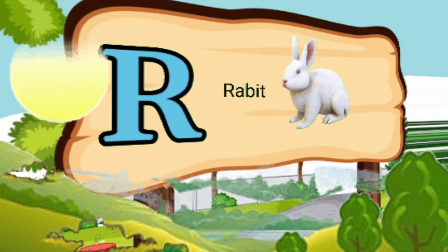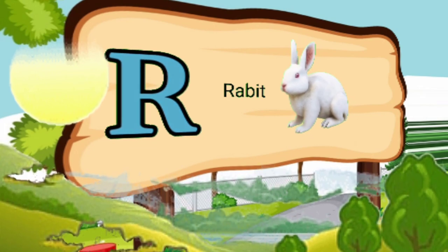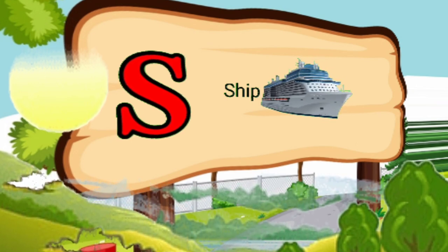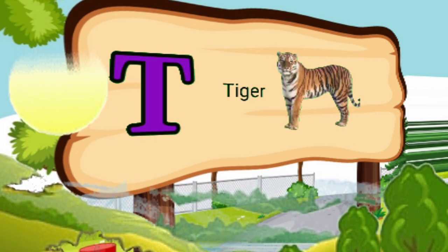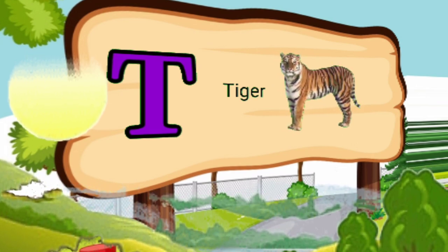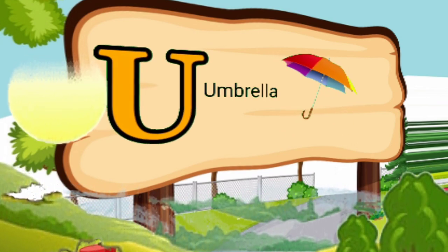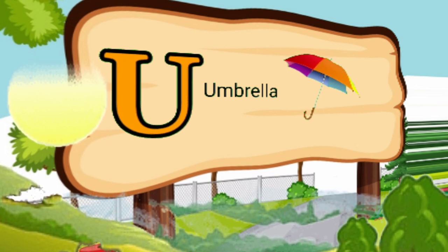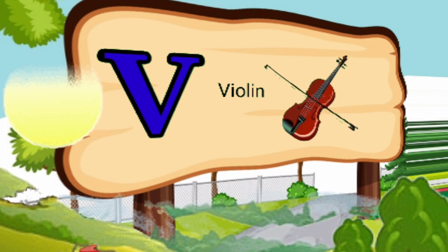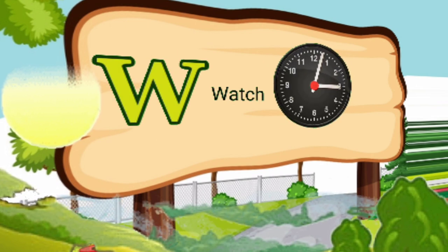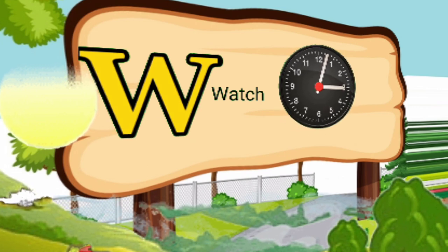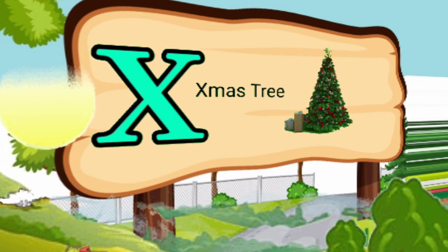Q for queen. R for rabbit. S for sheep. T for tiger. U for umbrella. V for violin. W for watch. X for xylophone.